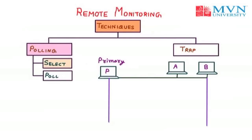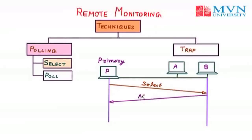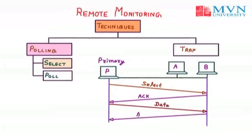For example, the primary system wants to send data to secondary system B. In that case, P will send a select message to B, informing B that it wants to send something. B will then send back an acknowledgement (ACK) to P, meaning you can send the data. The primary system receives the acknowledgement and sends the data to B. When the data is received by B, it sends another acknowledgement to P confirming receipt. That is all about the select function.